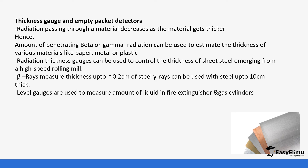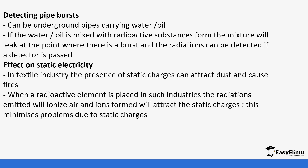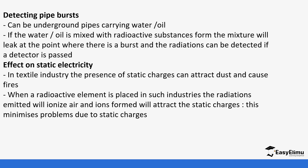Level gauges are also used to measure the amount of liquid in fire extinguishers and gas cylinders. Radioactive compounds can also be used to detect pipes that have burst, including underground pipes carrying water and oil.